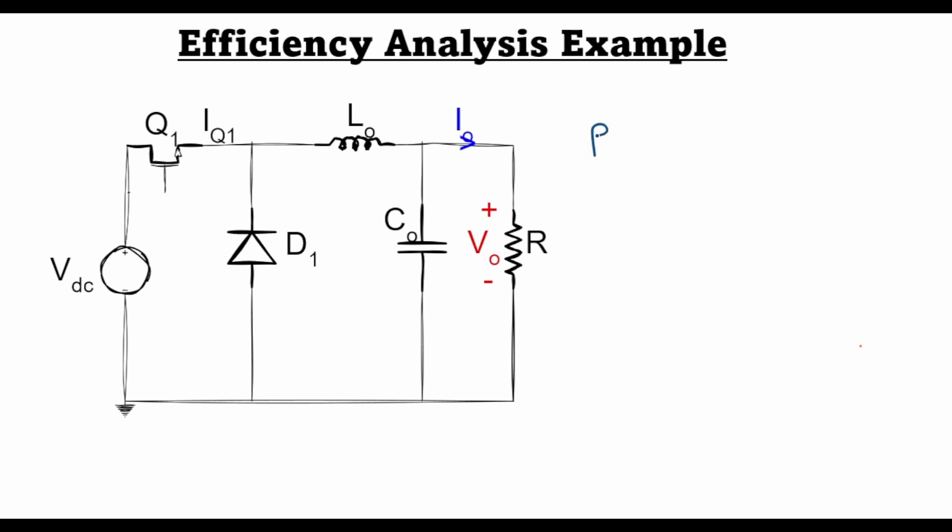Namely the DC power losses which arise due to conduction in the transistor Q1 and the diode D1. Also we found out an expression for the AC power loss which arises due to switching in the power transistor.